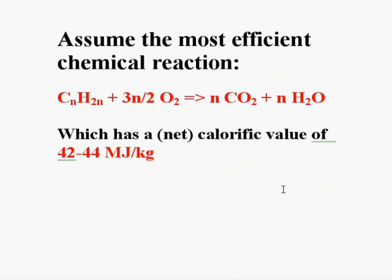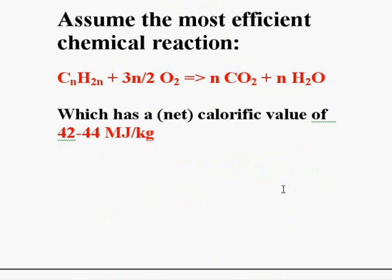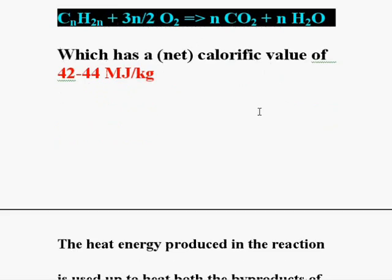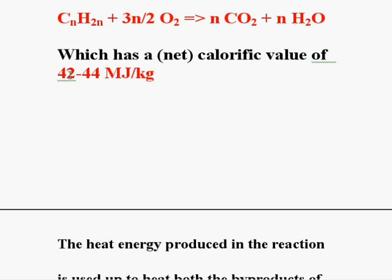We'll assume the most efficient chemical reaction. This is the hydrocarbon and the oxygen and the byproducts are carbon dioxide and water vapor. And this has a net calorific value of 42 megajoules per kilogram.